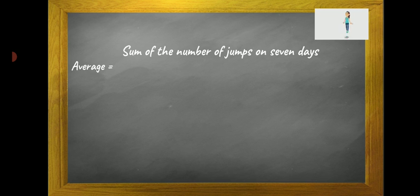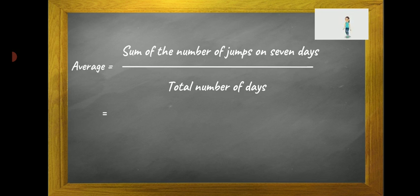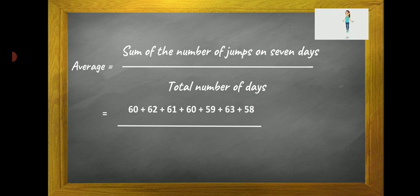The average is equal to sum of the number of jumps on seven days upon total number of days, which is equal to 60 plus 62 plus 61 plus 60 plus 59 plus 63 plus 58 divided by 7, which is equal to 423 divided by 7, which is equal to 60.42.